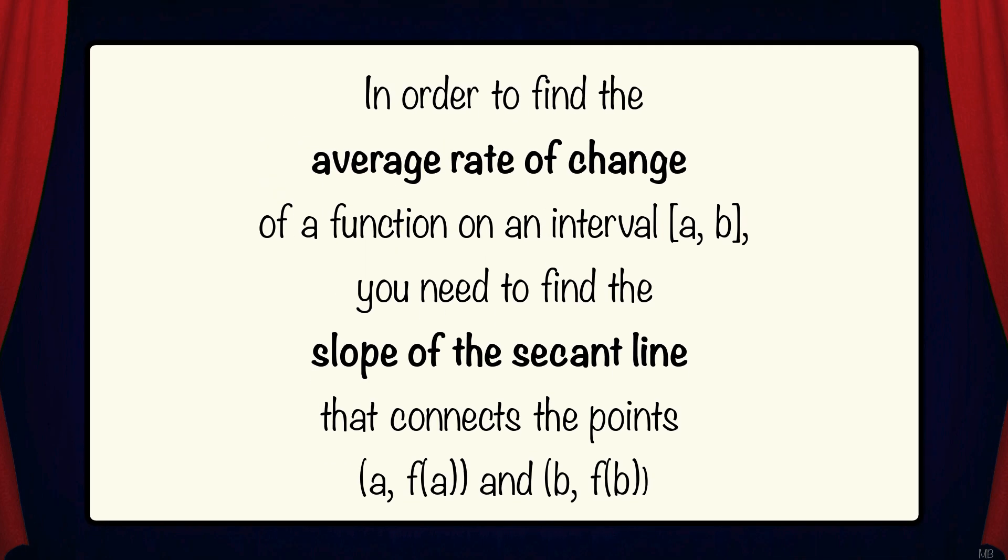In order to find the average rate of change of a function on an interval [a, b], you need to find the slope of the secant line that connects the points (a, f(a)) and (b, f(b)).